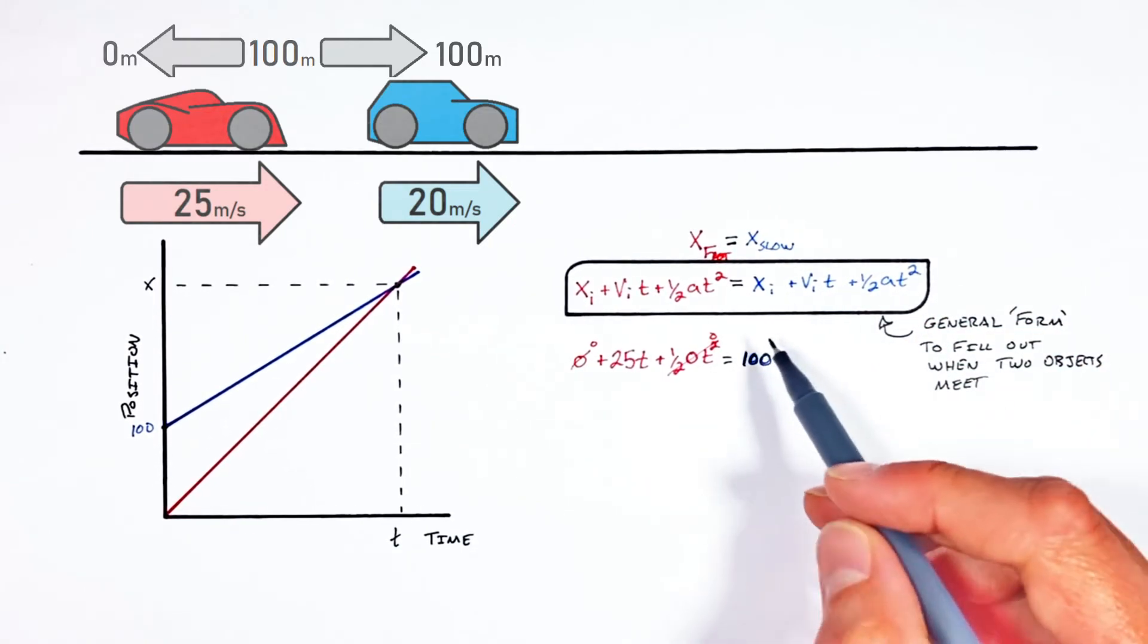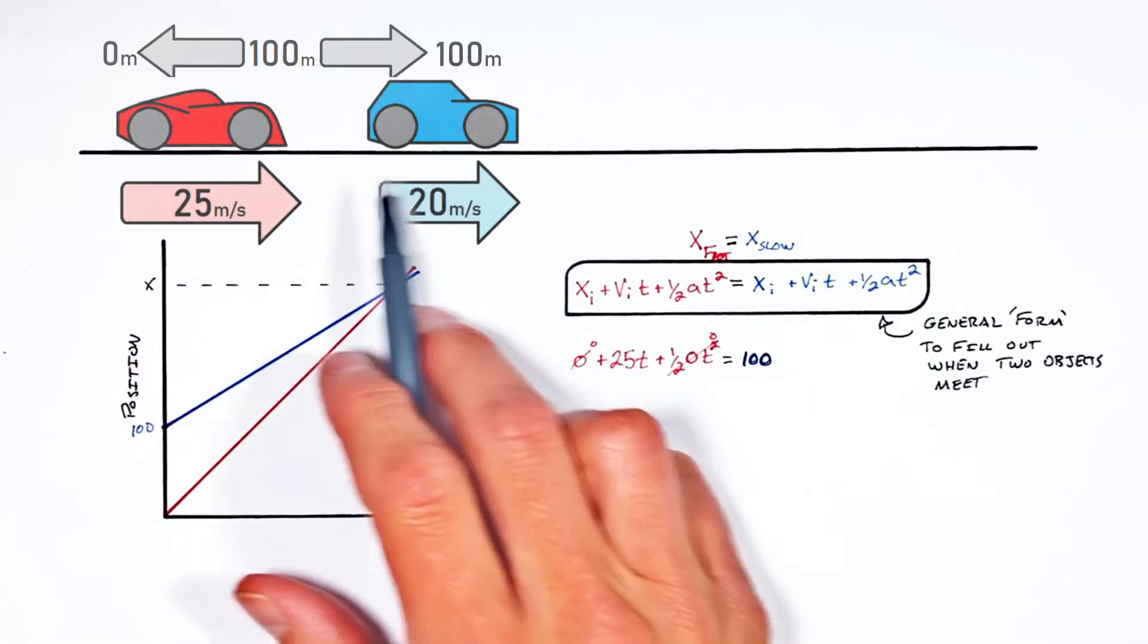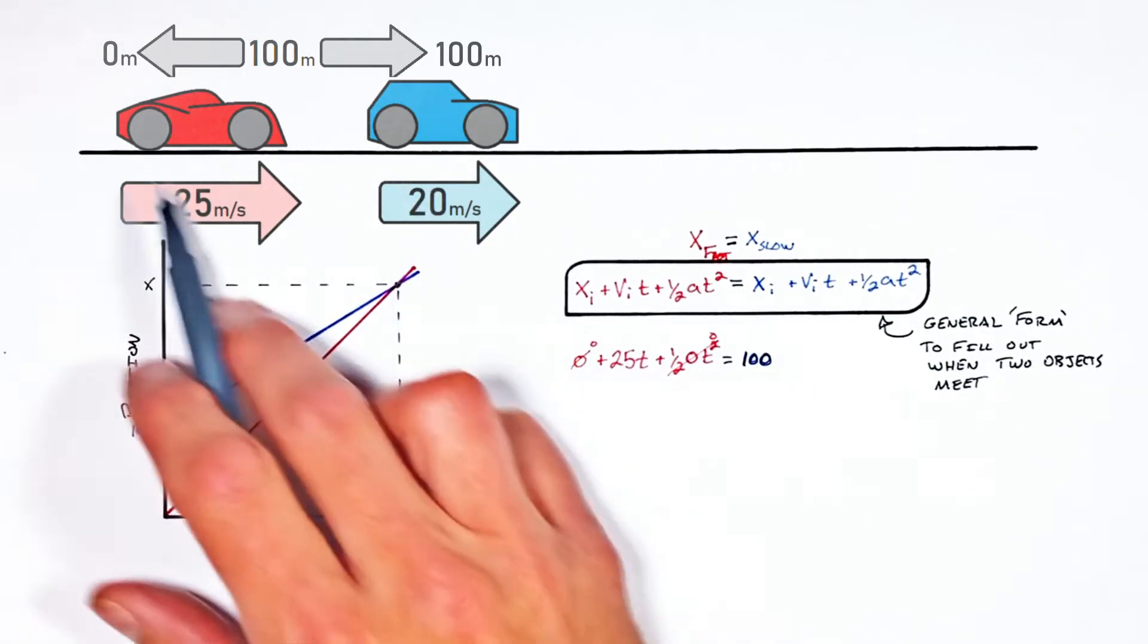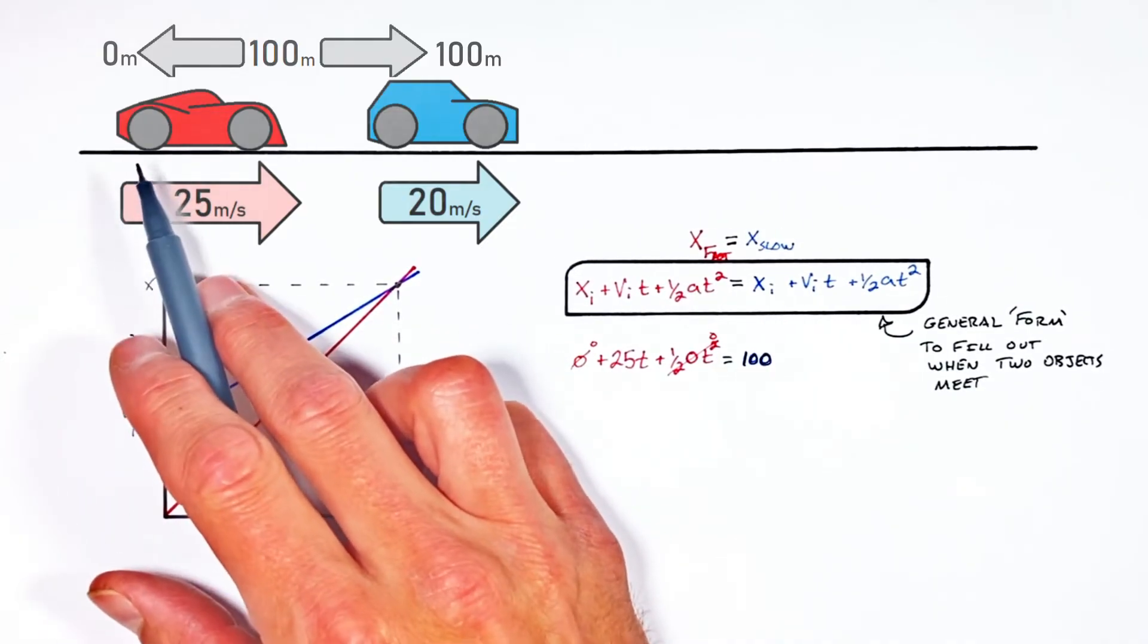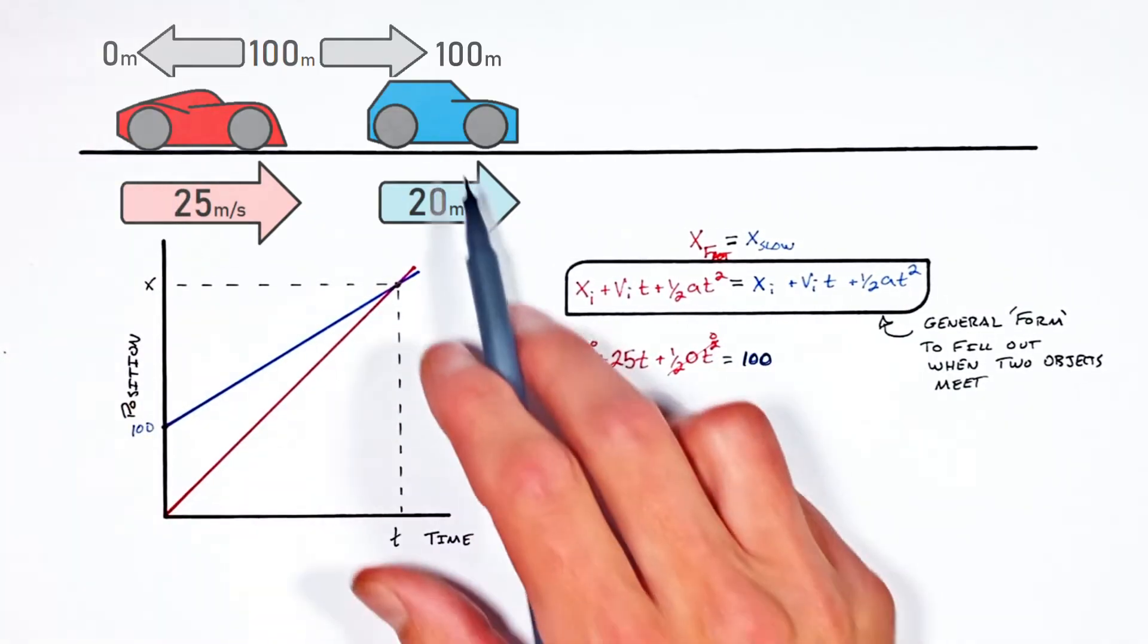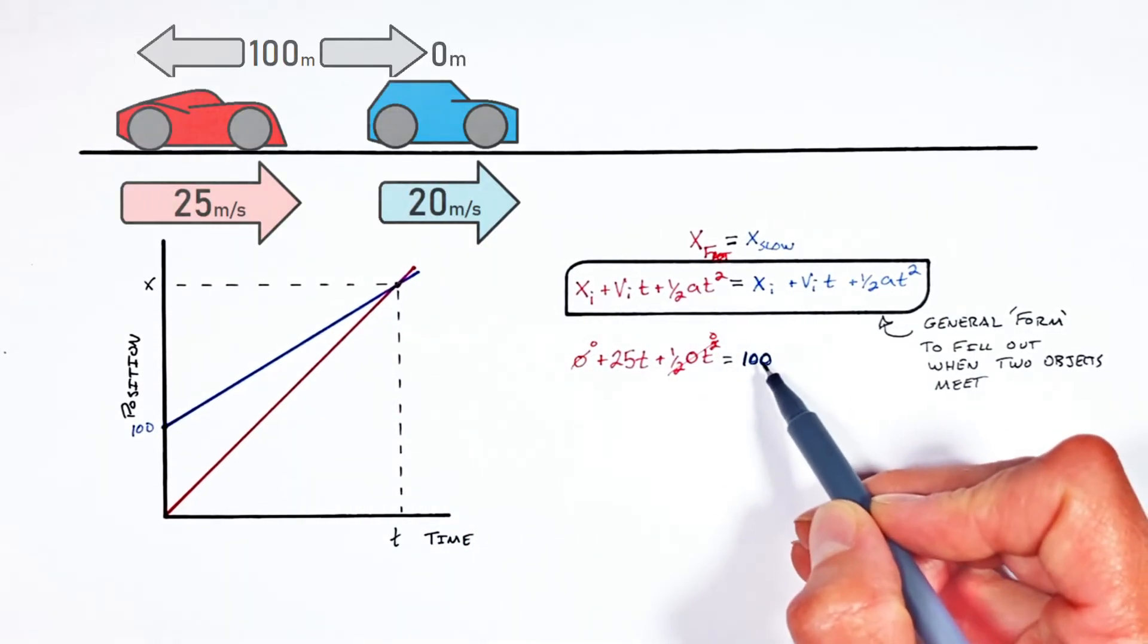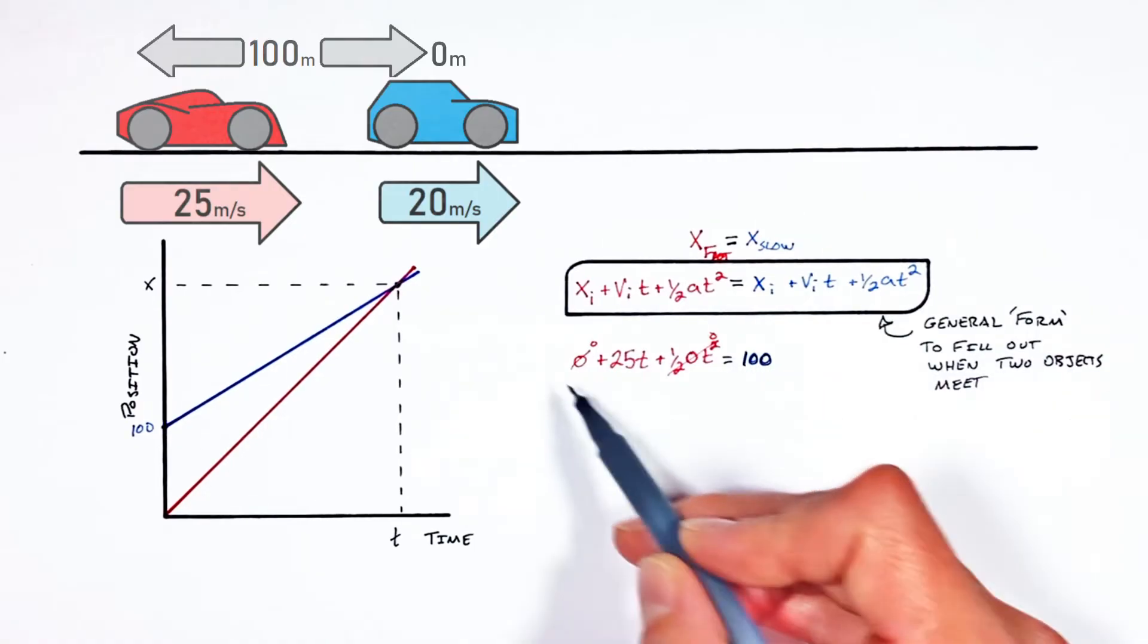But this leads us up to an idea here. Remember earlier I said it was arbitrary as to which vehicle we said started at a position of zero. And we chose to say this fast car was starting at a position of zero. But if we'd said the slower car was starting at a position of zero, that would have made this initial position zero right here.